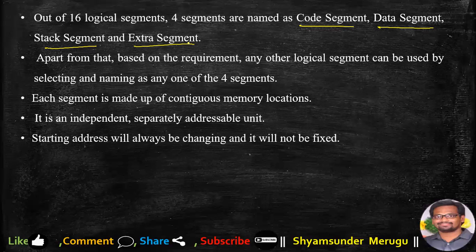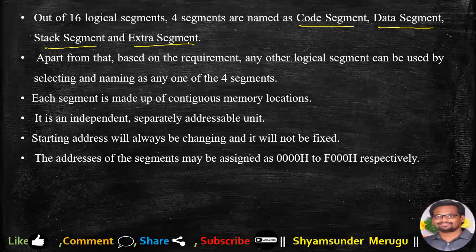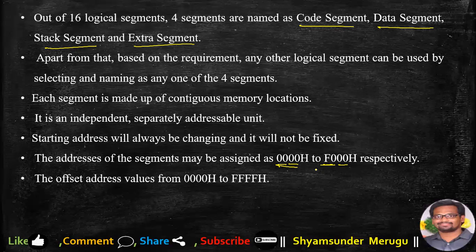If you give an address to a segment, it is not fixed — next time that address may change. The address of these segments may be assigned from 0000H to F000H respectively, since we have 16 segments represented in hexadecimal (0 to F). The offset address values range from 0000H to FFFFH, giving us 64 KB size or 64K locations.